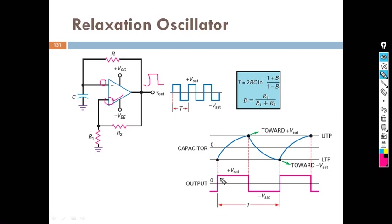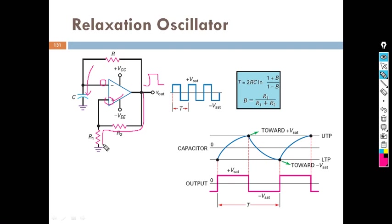So the output will be positive — that is plus Vsat. Now this Vsat output voltage is fed back through the resistor and our capacitor will try to recharge. The same Vsat voltage is also fed back through the resistor divider network.